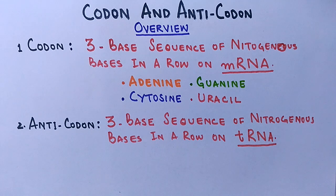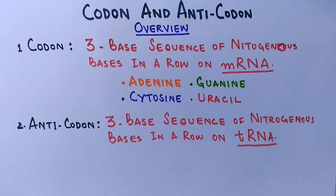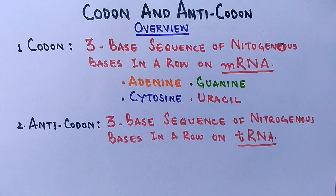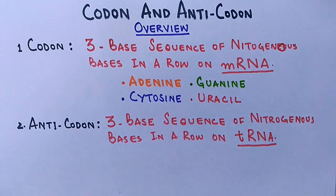Remember that tRNA contains not only adenine, guanine, cytosine, and uracil, but also pseudobases, which do not account for the anticodon. The messenger RNA carries the message or information in codons — these three-base sequences tell the ribosome which amino acid is to be made.